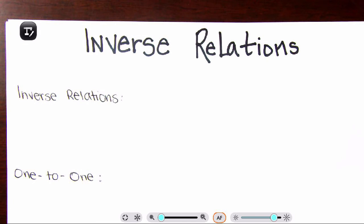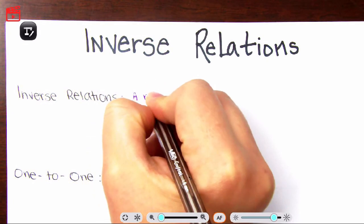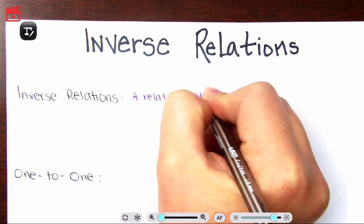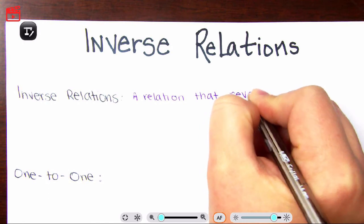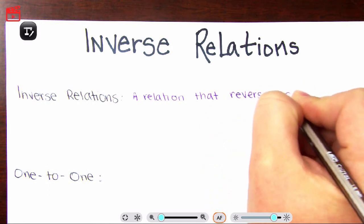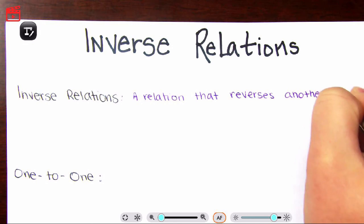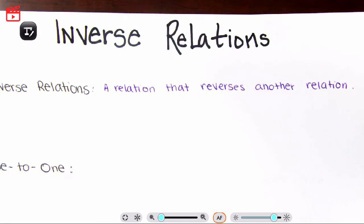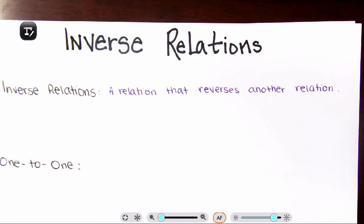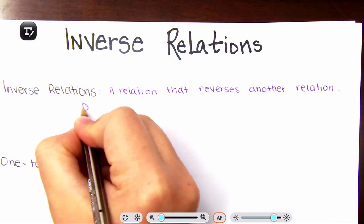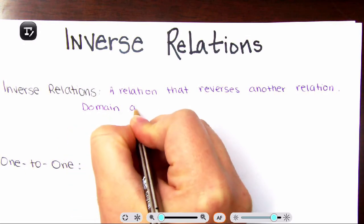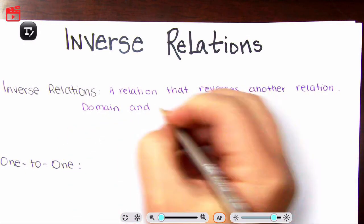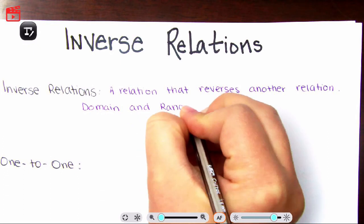So inverse relations — when it's asking you to find the inverse, it is a relation that reverses another relation. This sounds like it's going in a circle — a relation that reverses another. What that means is your domain and your ranges, they switch.